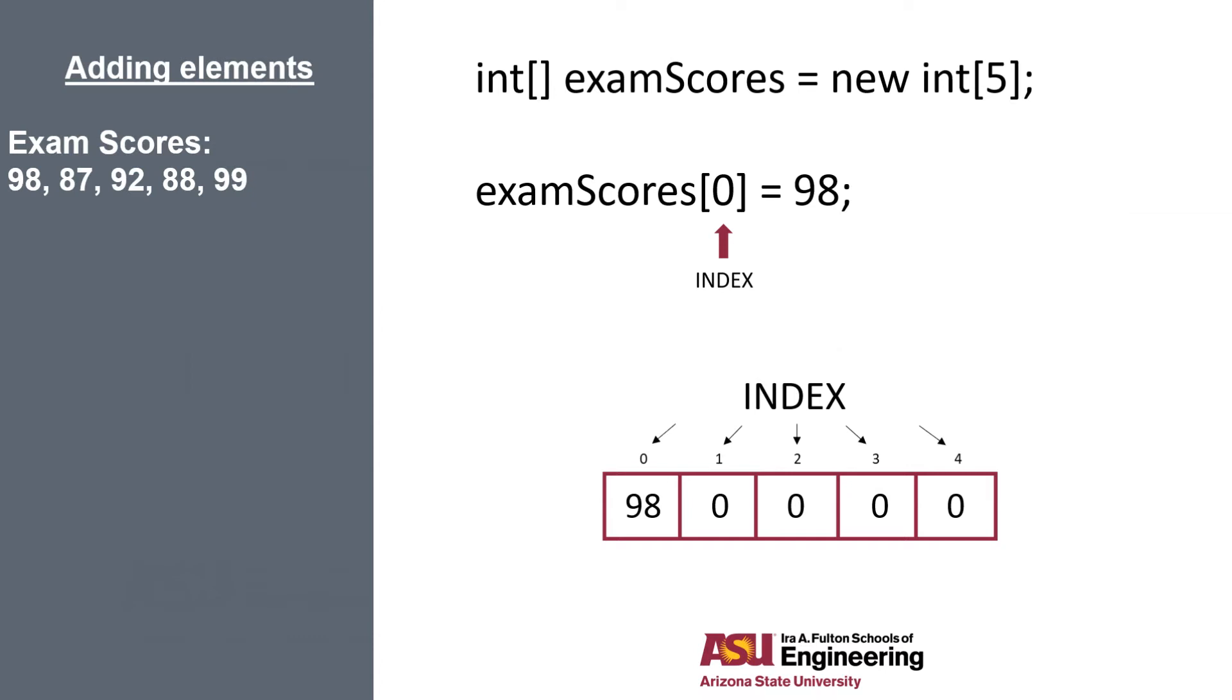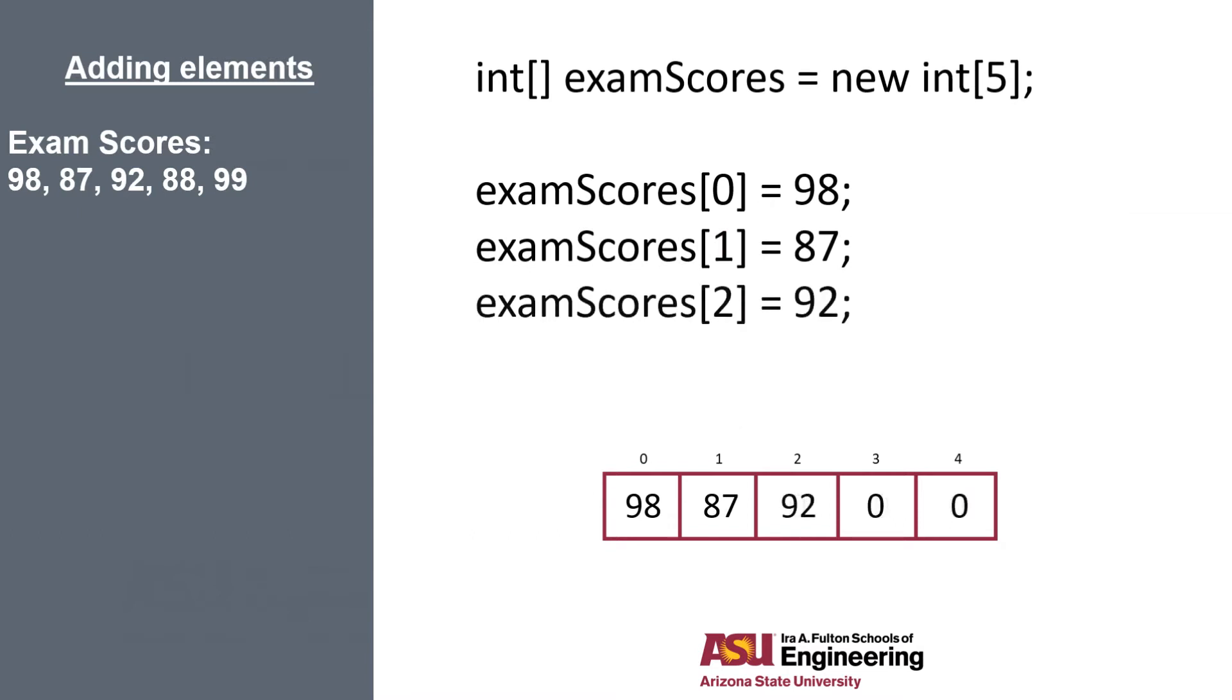We can insert a single element at a time. So how this works is we type the variable name, and after it we use the square brackets, but this time in the brackets is the index we're adding an element to in the array. So you can see that our array at index 0 now contains the value 98. And we can do this for every index.